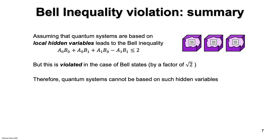Therefore, quantum systems cannot be based on such hidden variables. And this behavior of quantum systems has been experimentally verified. The rough idea is to generate two particles in a Bell state and send them out in opposite directions to reach detectors, which are set in various ways.